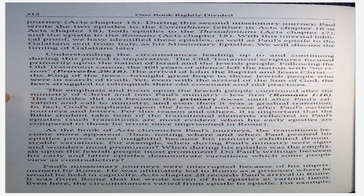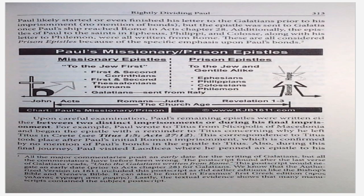For example, when during Paul's ministry were signs and wonders most prominent? When during his epistles was the emphasis upon the Jewish people most prominent? Do Paul's writings between his earlier and latter epistles demonstrate variations which some people view as contradictory? Paul's missionary journeys were interrupted because of his imprisonment by Rome. He was ultimately led to Rome as a prisoner where he would be held in captivity. Acts chapter 28 records Paul's arrival in Rome. It was from Rome that he wrote seven of his epistles at various times. Even here, the circumstances varied from epistle to epistle. For example, Paul likely started or even finished his letter to the Galatians prior to his imprisonment — no mention of bonds — but the epistle was sent to Galatia once Paul's ship reached Rome in Acts chapter 28. Additionally, the epistles of Paul to the saints at Ephesus, Philippi, and Colossae, along with his letter to Philemon, were all written from Rome. These are all considered prison epistles because of the specific emphasis upon Paul's bonds.